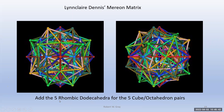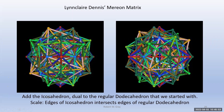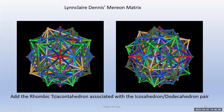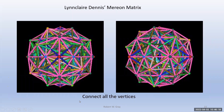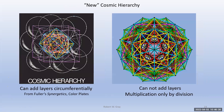Then add in the five rhombic dodecahedra corresponding to the five cube–octahedron pairs, then add the dual to the dodecahedron — the icosahedron — scaled so that its edges intersect the edges of the regular dodecahedron. That gives us the rhombic triacontahedron. Connect all the vertices and I showed that to Linclair. She thought it looked right — the kind of 'bumpiness' of the polyhedron she saw. I like to call this a new cosmic hierarchy, off of Bucky Fuller's cosmic hierarchy.